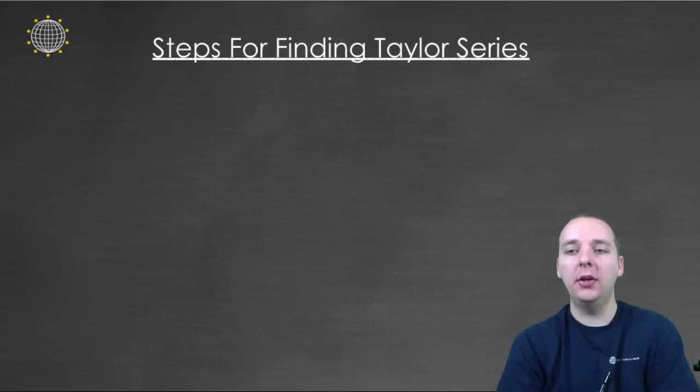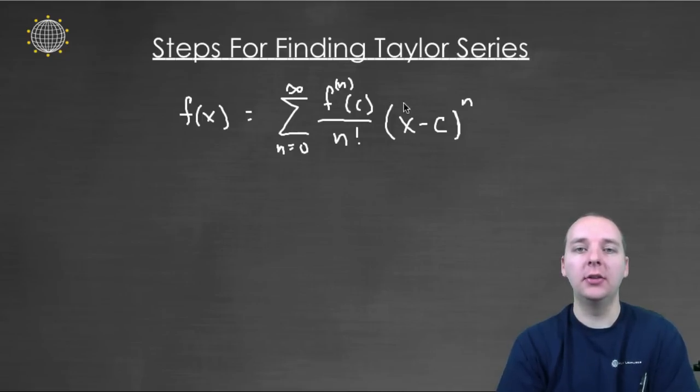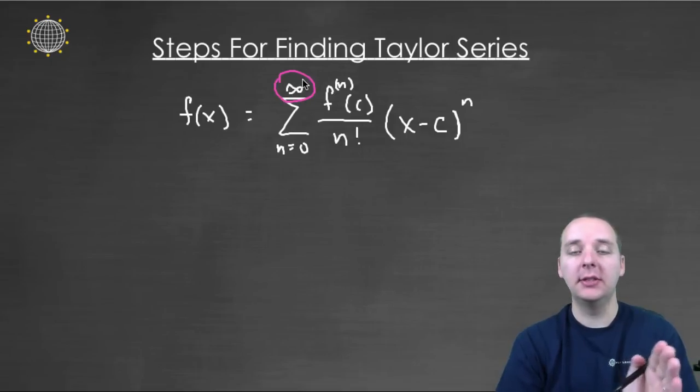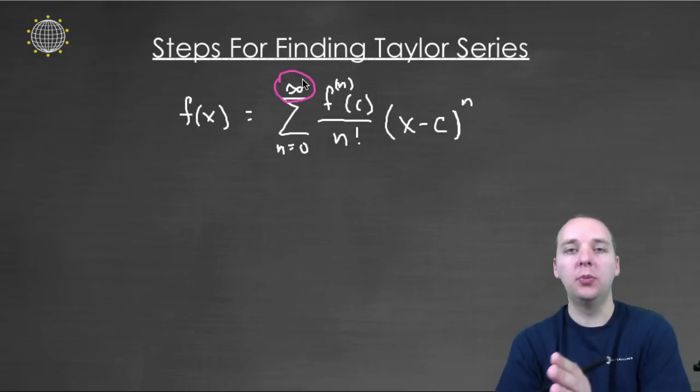So now, we already know the definition of a Taylor series. It's like a Taylor polynomial, but you have infinitely many terms. Instead of a polynomial that stops at a finite degree, you add on more terms and more terms, you actually let that sum go towards infinity.